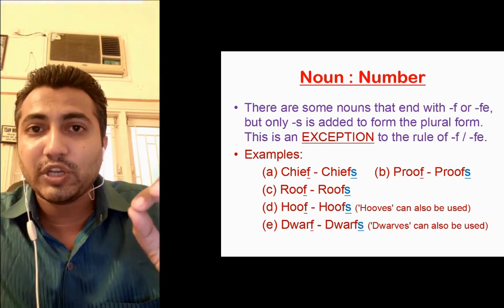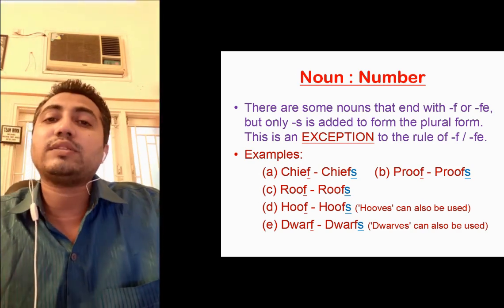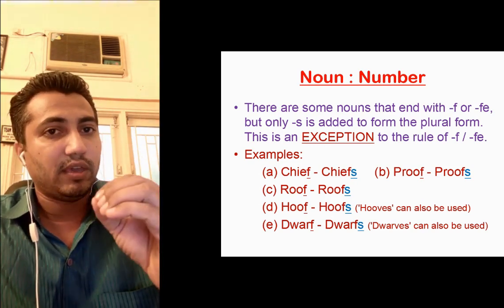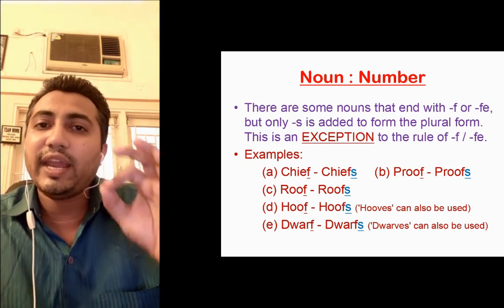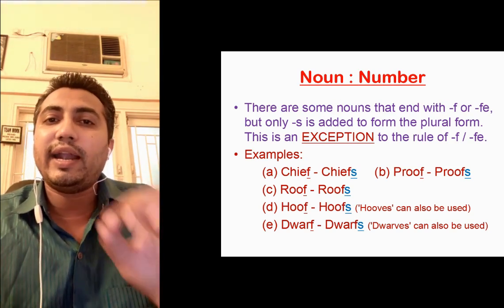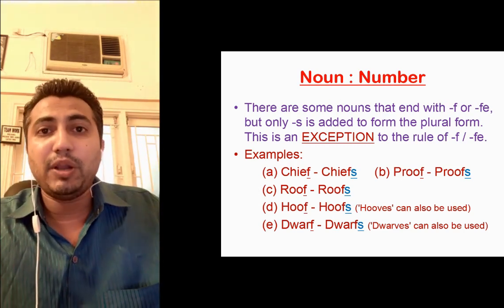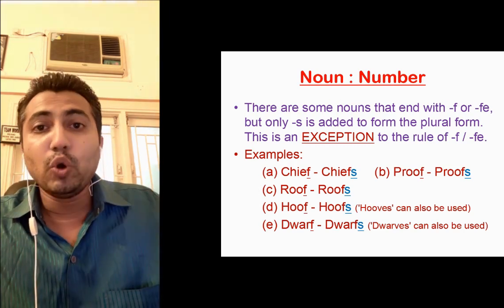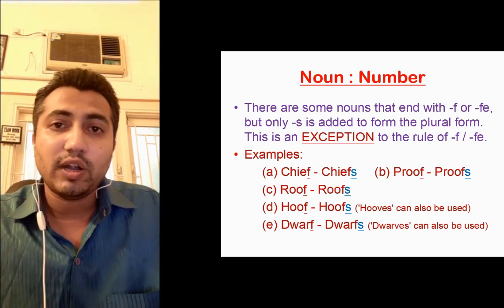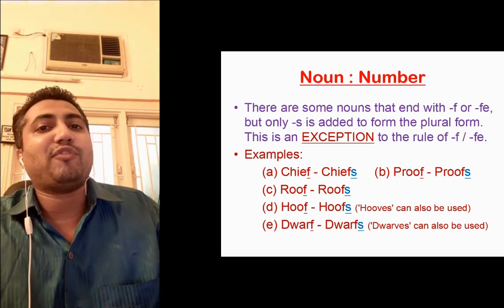There is also an exception to the rule of 'f' or 'fe'. There are some nouns which end with 'f', but still to convert them into plural we only add 's' — we do not change to 'ves'. For example: chief becomes chiefs, proof becomes proofs, roof becomes roofs, hoof becomes hoofs, dwarf becomes dwarfs. This is an exception to the rule of 'f' or 'fe'.